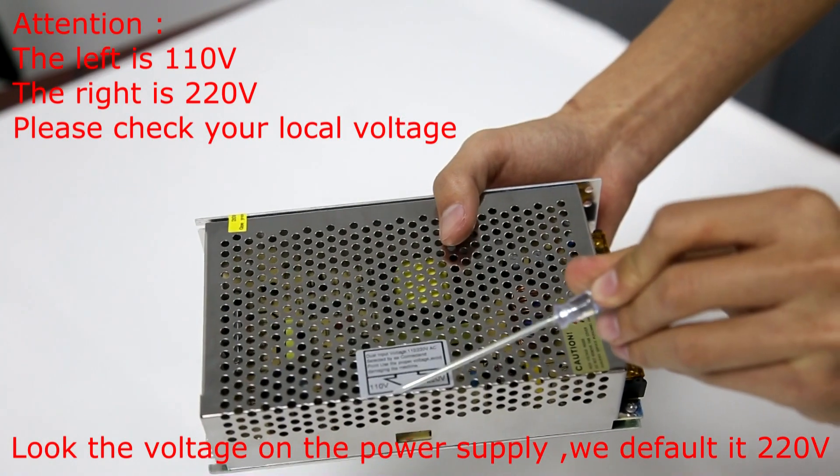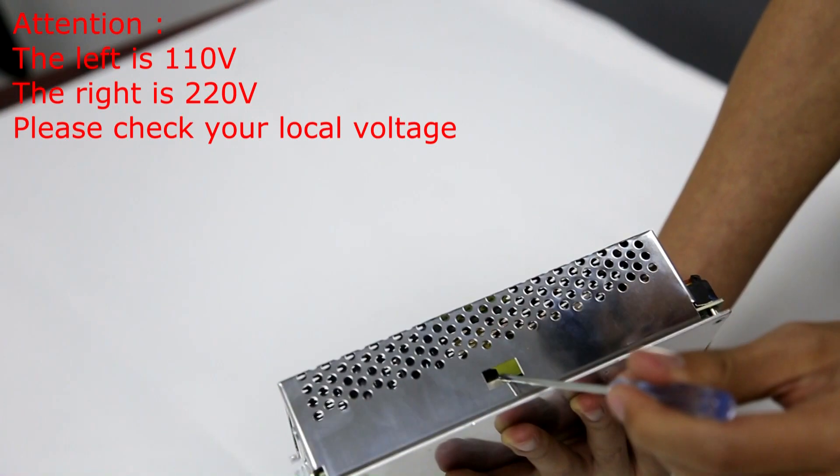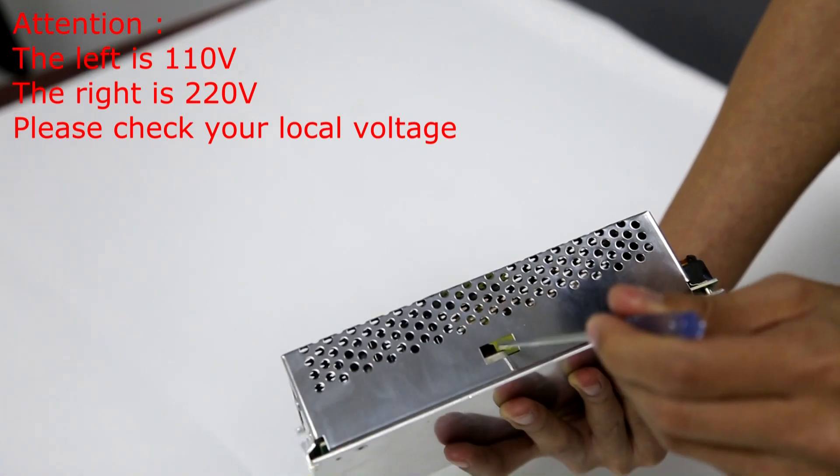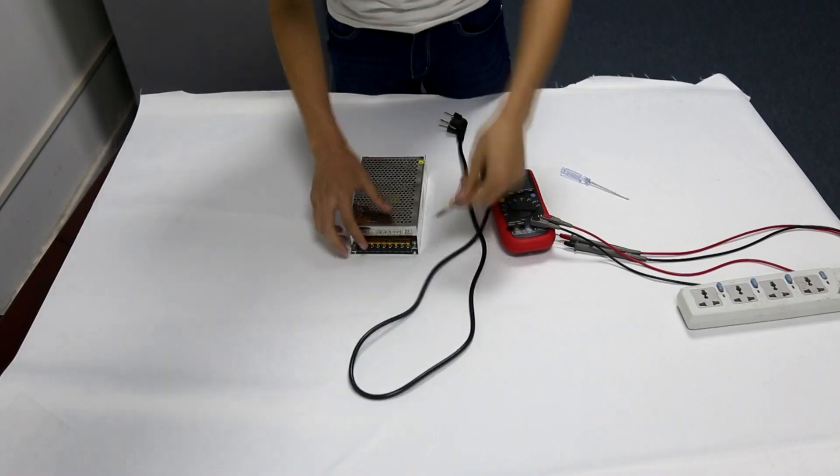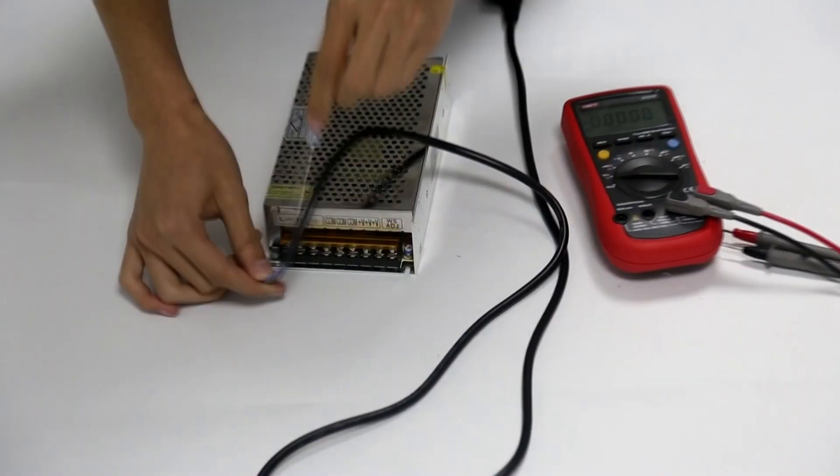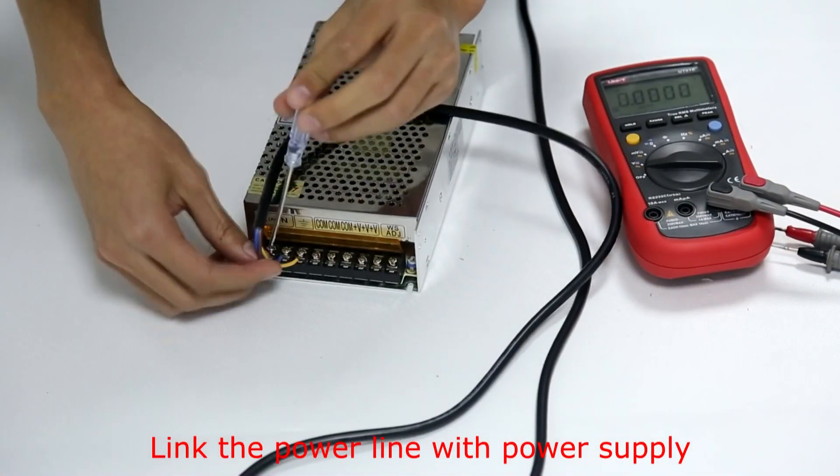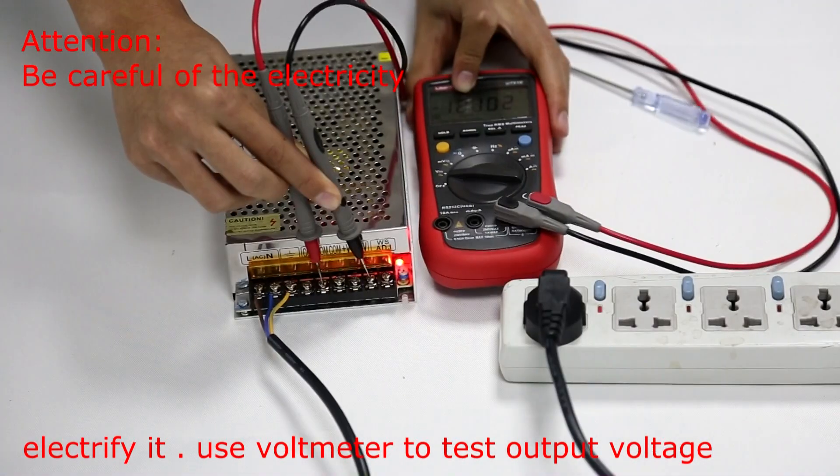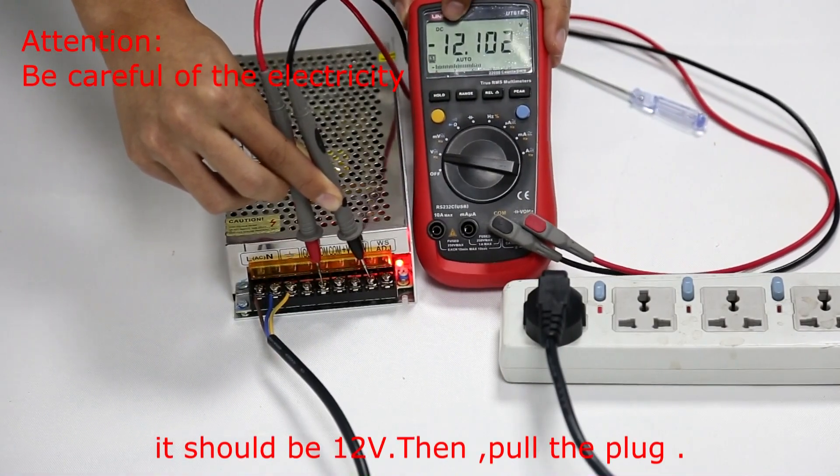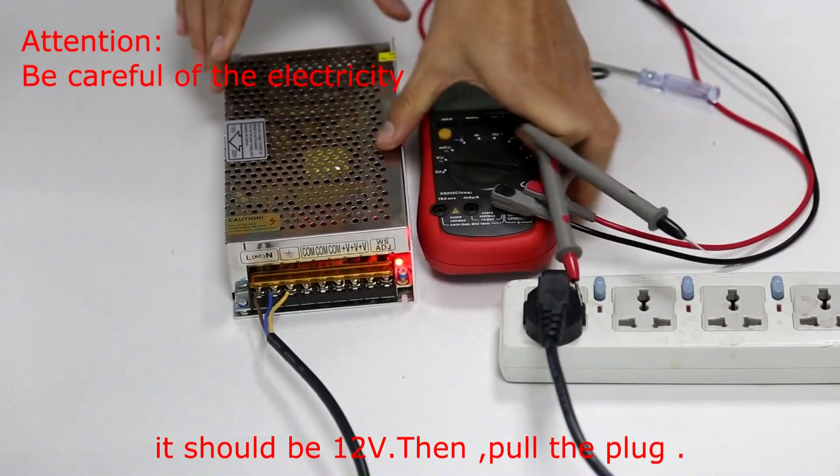Look at the voltage on the power supply. We default it to 220 voltage. If your local voltage is 110 voltage, please slide the black button to change. Link the power line with power supply. Electrify it. Use a voltmeter to test the output voltage. It should be 12V. Then, pull the plug.